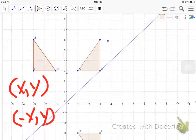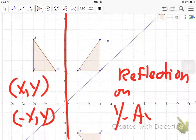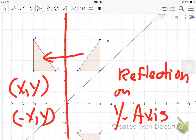Let's look at a reflection on the y-axis, reflecting across that vertical line. For this one, the rule: you take your original (x, y). And this time, you flip the x value, make it negative, and the y value remains the same.